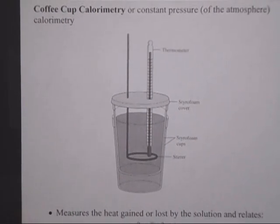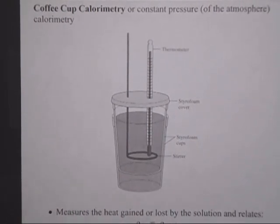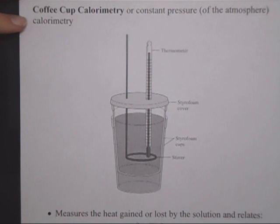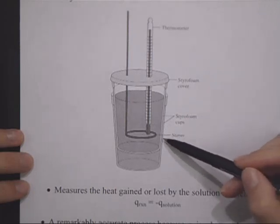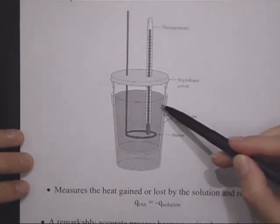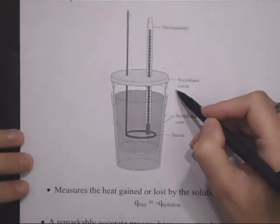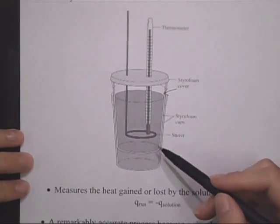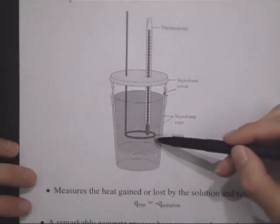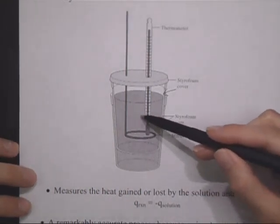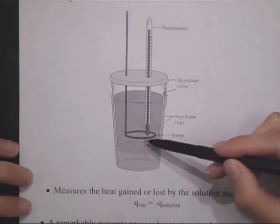In coffee cup calorimetry, or constant pressure calorimetry, which is the process we've been doing for the last two problems, you have a very simplistic setup. You basically have two styrofoam cups. One is an insulator for the other. The inner styrofoam cup acts as the reaction vessel, and inside it you usually have a solution, one or more solutions, sometimes a solid, but the reaction is occurring in solution inside the inner cup.